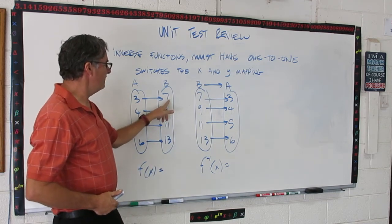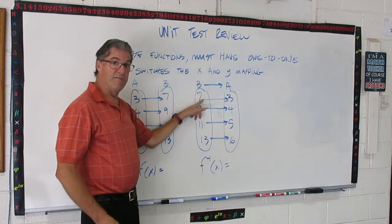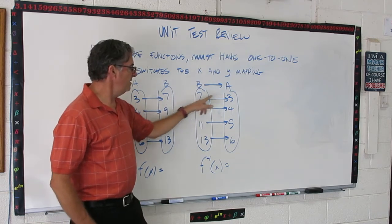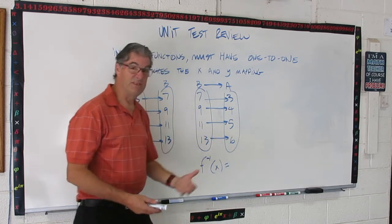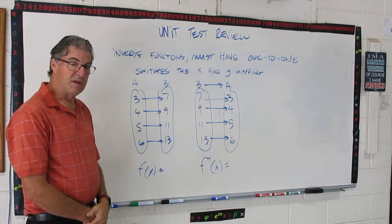So, now we have the output for the function is now the input for the inverse function. So, 7 becomes 3, 9 becomes 4, 11 becomes 5, and 13 becomes 6. It's pretty straightforward that.